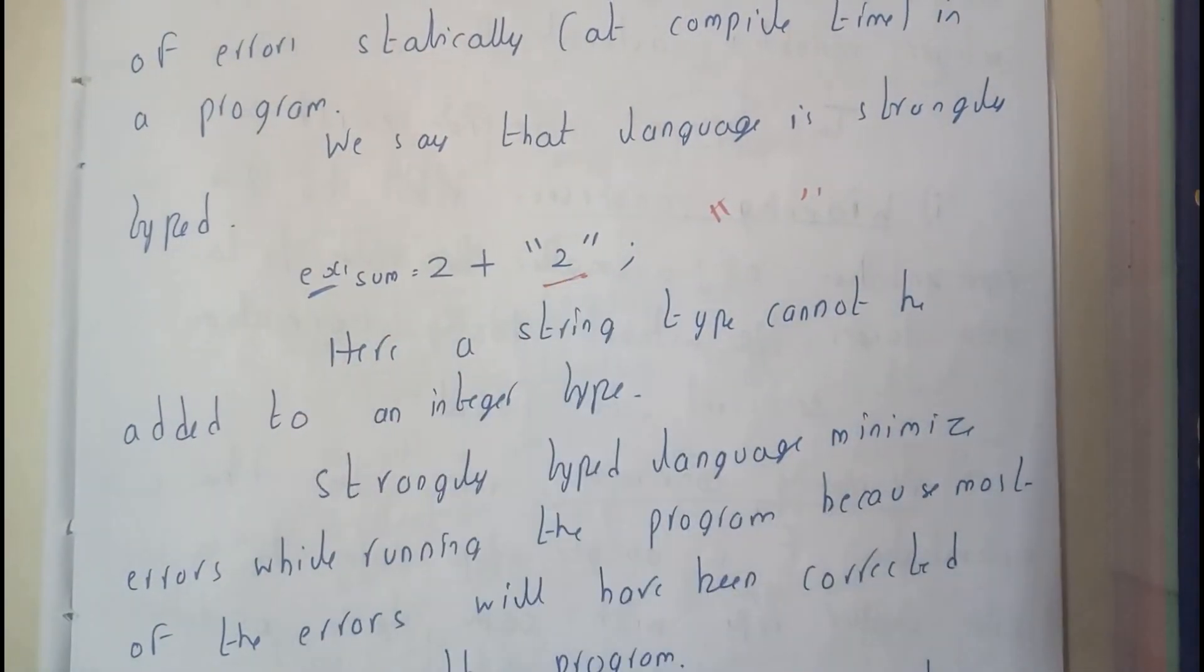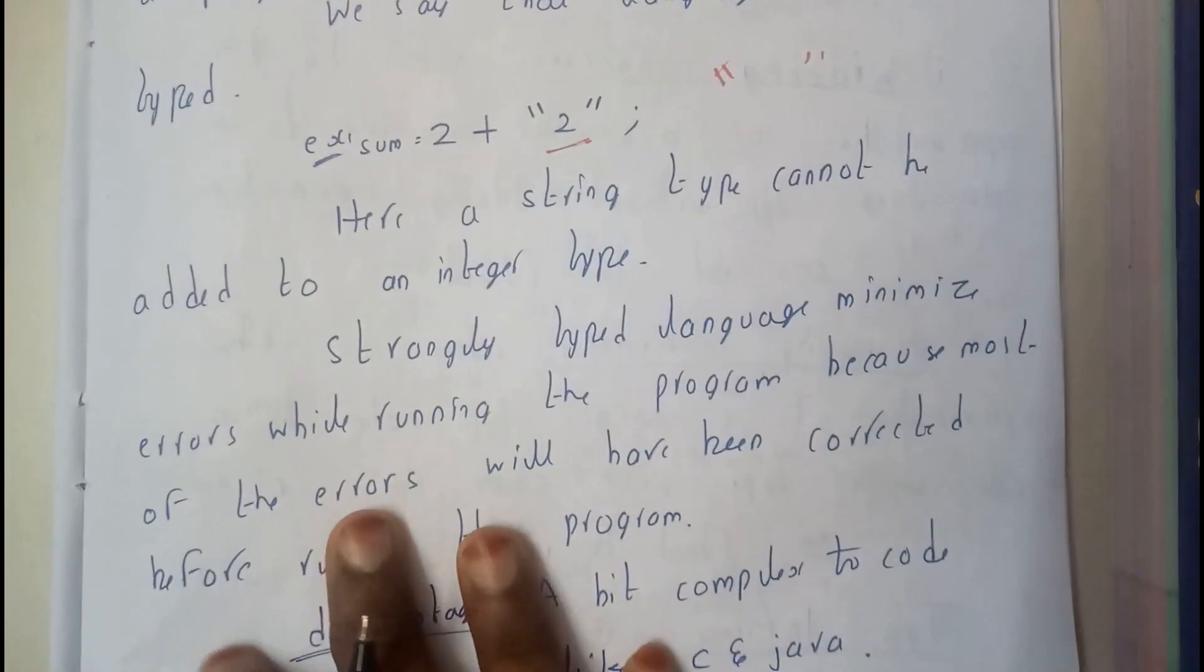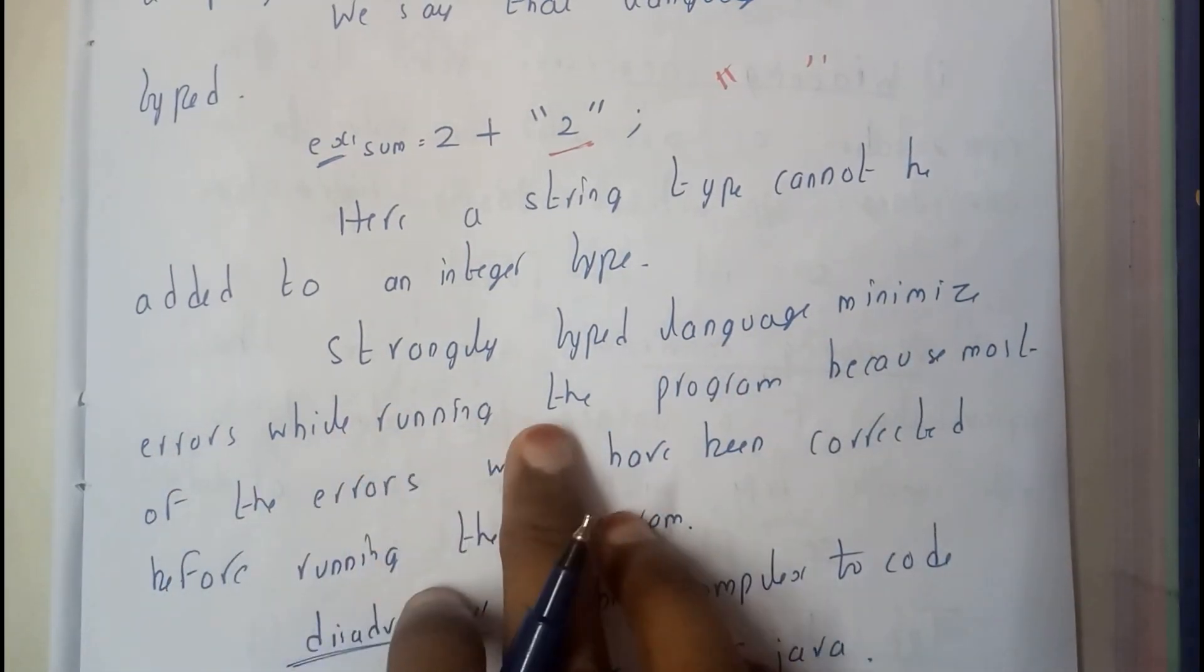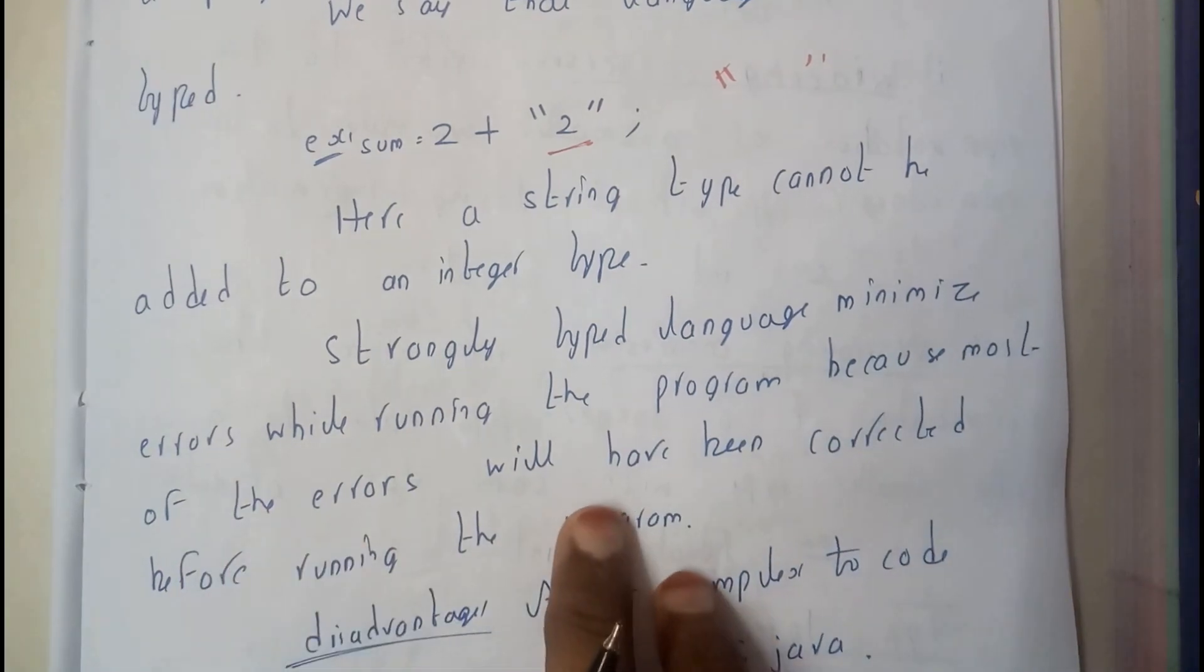So this will give you a compile time error. If you rectify that error, strongly typed languages minimize errors while running the program because most of the errors will have been corrected before running the program.